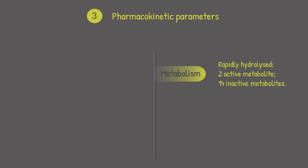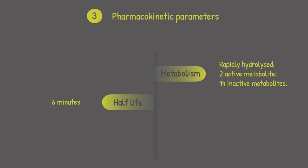Regarding pharmacokinetic parameters, Epoprostenol is administered as IV infusion or continuous inhalation, so there is no absorption phase. Coming to metabolism, Epoprostenol is rapidly hydrolyzed, and enzymes convert it into two active metabolites with minimal activity, and 14 other inactive metabolites.